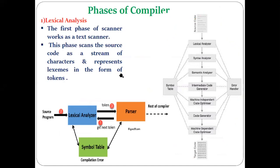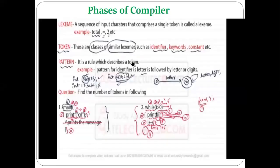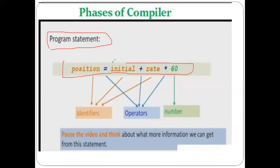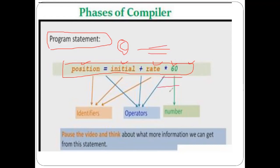Before we start with the first phase of the compiler — lexical analysis — we need to discuss some terms that will help us understand all the phases. An example program statement is: position = initial + rate * 60. This is a formula written in C language as part of a program. We need to concentrate on this particular statement to understand the terms token, pattern, and lexeme.